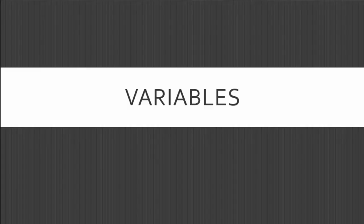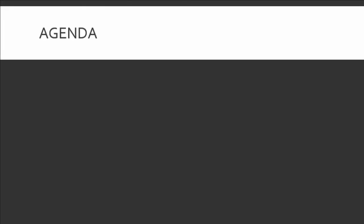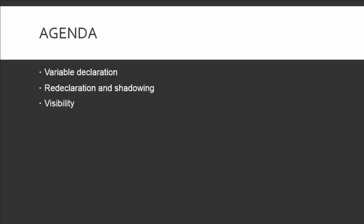Over the last couple of videos we've laid some foundation — the history and features of Go and setting up the local development environment. Today we're going to start a discussion about the Go language itself by discussing how to work with variables. To fully cover variables, we'll go through: how to declare variables, how Go considers redeclaration and the concept of shadowing, visibility, naming conventions, and finally how to convert variables from one type to another.